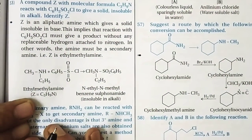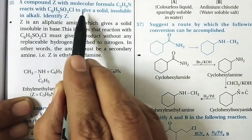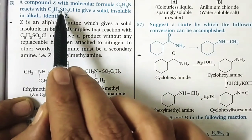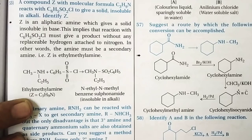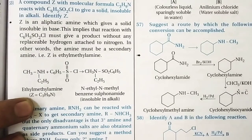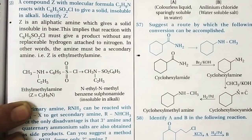Question 53: Compound Z with molecular formula C3H9N reacts with benzene sulfonyl chloride to give a solid insoluble in alkali. Since secondary amines give products insoluble in alkali, compound Z must be a secondary amine. The only secondary amine with molecular formula C3H9N is ethylmethylamine (N-methylethanamine).